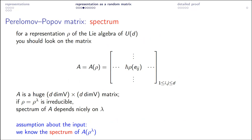I promised you a perspective from random matrix theory, and here comes the main hero of this talk — a matrix which we will view as a kind of random matrix. This matrix was introduced a long time ago by Perelomov and Popov, and it encodes full information about your representation. It is a d×d matrix where at the intersection of the i-th row and j-th column, you put ℏ times ρ applied to the matrix unit E_{ij} — a matrix that has almost all zeros and exactly one entry equal to one in the appropriate position.